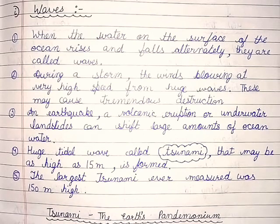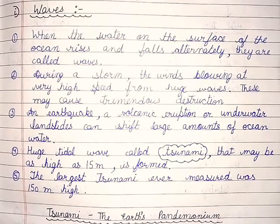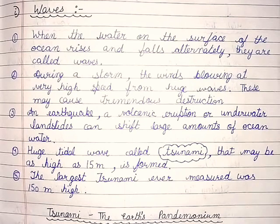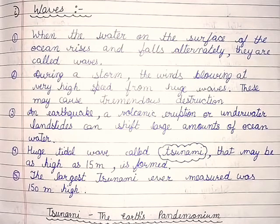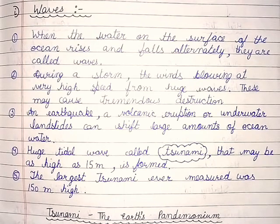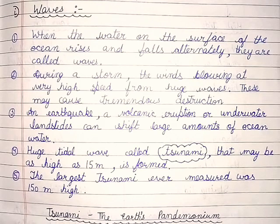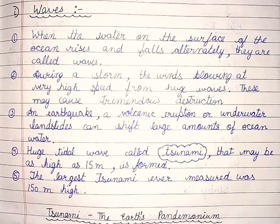During a storm, the winds blowing at very high speed form huge waves. These may cause tremendous destruction. An earthquake, a volcanic eruption or underwater landslides can shift large amounts of ocean water.